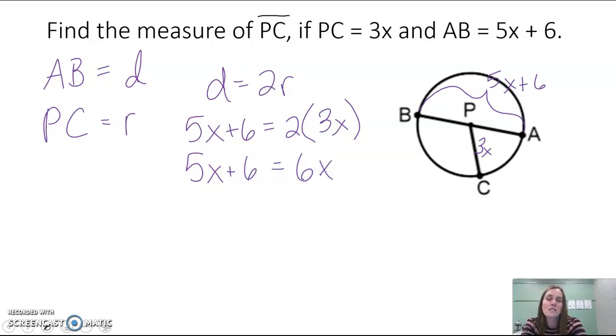So now we have 5x plus 6 equals 6x. We don't want to have our variable on both sides of our equation because we want to get our variable by itself. So we need to get our variable to the same side. Usually it's easiest to move the smaller one over, and 5x is our smaller one, and it does make sense to move 5x over.